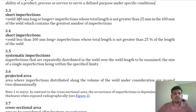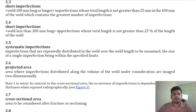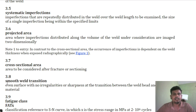The next terms are short imperfection and long imperfection. For a weld 100 mm long or longer: a short imperfection is one whose total length is not greater than 25 mm in the 100 mm of weld which contains the greatest number of imperfections. For a weld joint less than 100 mm long: a short imperfection is one whose total length is not greater than 25% of the length of the welding joint. This is called a short imperfection.